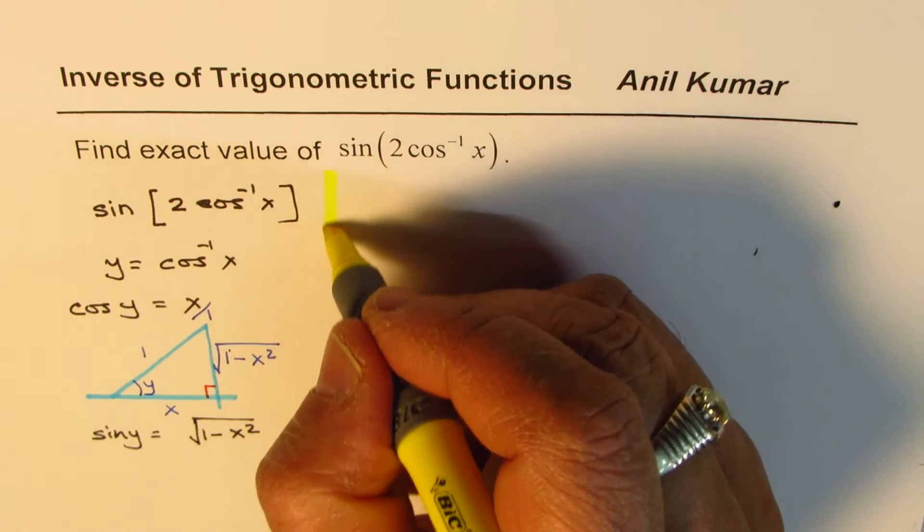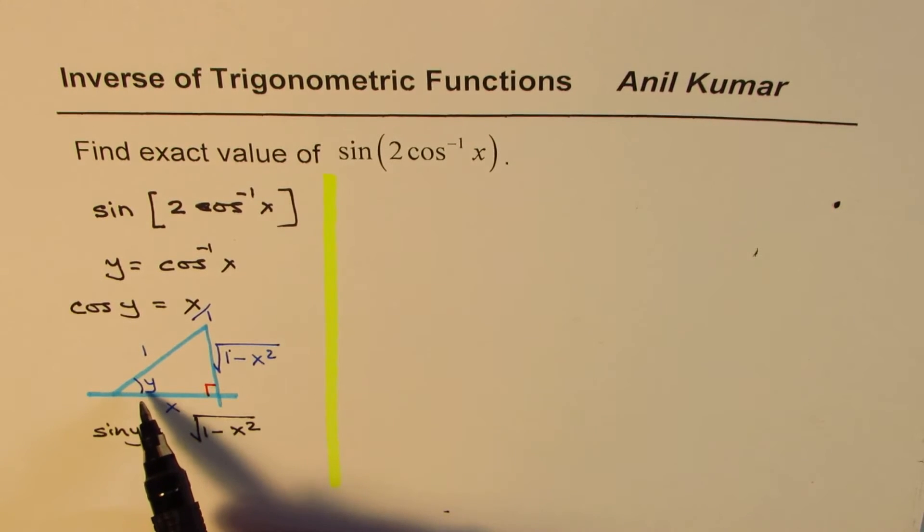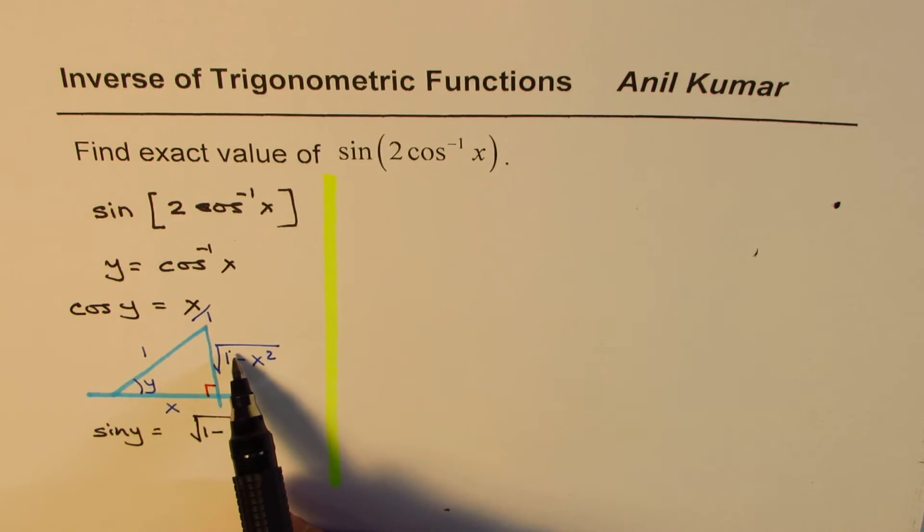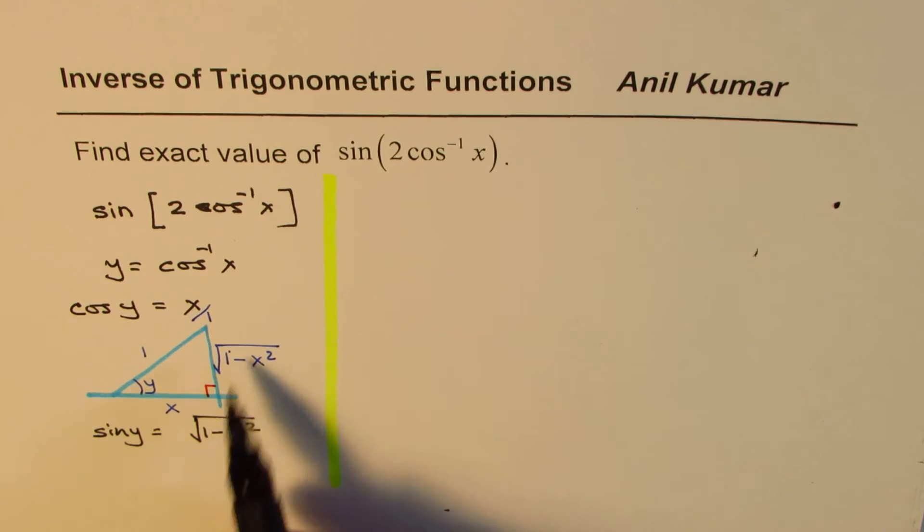So once you substitute cos⁻¹x as y, you can form a triangle with y as an angle. All this is in radians, and the adjacent and hypotenuse ratio is x. Opposite will be √(1 - x²).